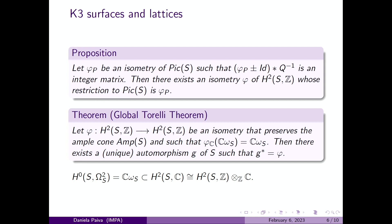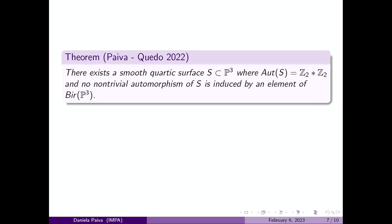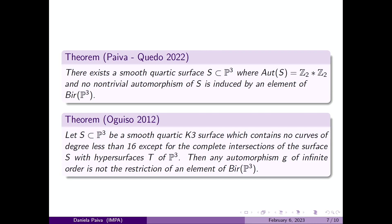With that, let me come back to our result. To prove this, we use the idea that Ogizo used to construct his examples. Basically, we use this theorem that says that if we have a smooth quartic surface which contains no curves of degree less than 16 except the complete intersections, then any automorphism of infinite order is not induced by a Cremona transformation of P³.